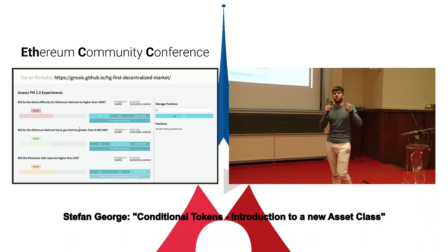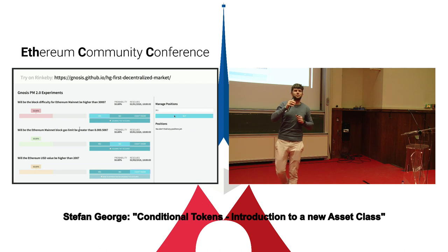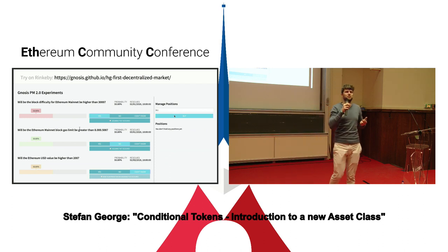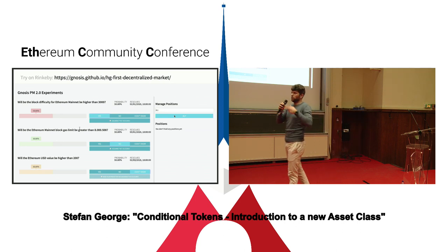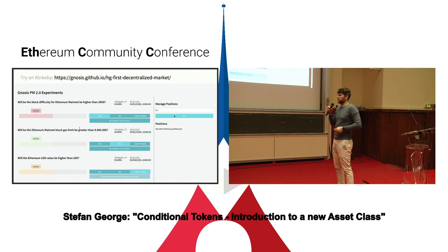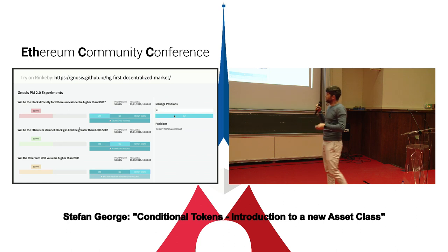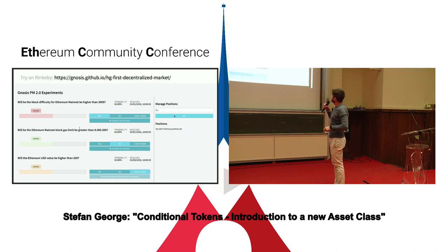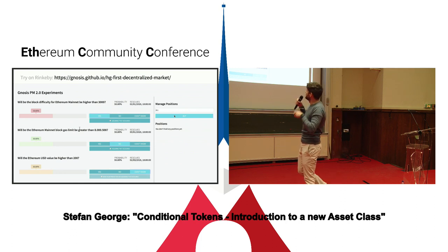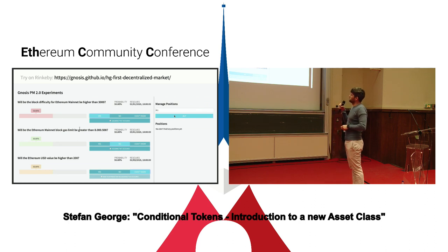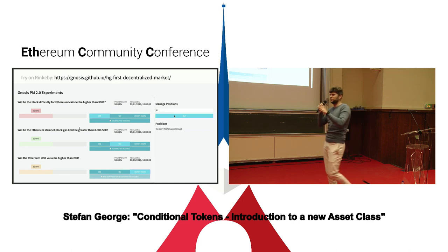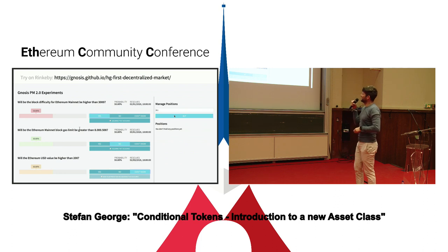In this case we're using a concept called LMSR market maker. It's a smart contract that someone can fund, and then this smart contract allows anyone to trade against it. For a simple prediction market this market maker just allows trading all possible outcomes of one prediction market. We modified this LMSR market maker so it can trade arbitrary combinations of all kinds of outcomes of those three markets. Here we set it up and right now it starts at 50/50/50. We will buy 0.1 outcome tokens worth of ether and invest into yes — block difficulty will be higher than 3,000 — and no — the block gas limit will be greater than 8,500,000. Those numbers don't necessarily make much sense, just to give you an idea.